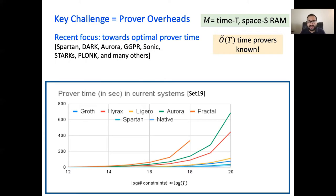As evidenced by this graph, where the y-axis is the running time of the prover in deployed systems and the x-axis is the logarithm of the size of statements being proved. The light blue line here is the native execution, which is the baseline. Quite clearly, recent deployed systems are approaching this line.